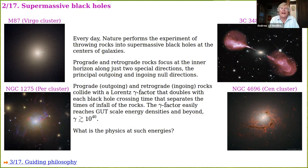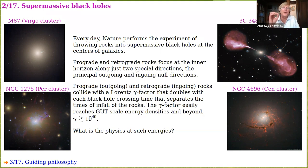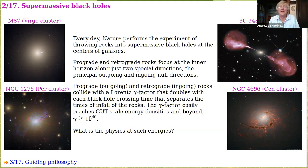The gamma factor doubles every black hole crossing time and quickly reaches enormous values. For example, the black hole at the center of our own Milky Way — four million times the mass of the sun — has a black hole crossing time of about 20 seconds. So each 20 seconds that you wait before throwing in a prograde and a retrograde rock, the energy with which they collide doubles. That exponentially growing factor is what Poisson and Israel referred to as mass inflation.